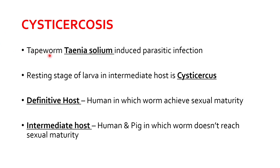First we will begin with cysticercosis. It is caused by tapeworm infestation — the causative parasite is Taenia solium, which is a tapeworm. The resting stage of the larvae in an intermediate host is known as a cysticercus, which is the pathogenic form that induces disease. Taenia solium passes its life cycle in two hosts: definitive and intermediate. The definitive host is where the parasite acquires sexual maturity and grows into an adult worm. In the intermediate host, sexual maturity is not achieved. Humans are both a definitive and intermediate host for cysticercosis, and pigs are additionally an intermediate host.